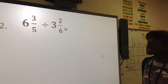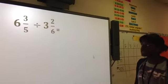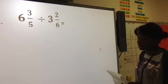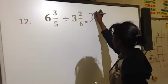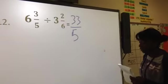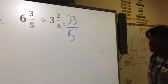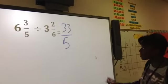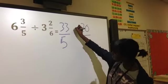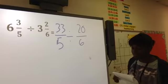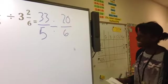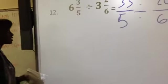Number 12, 6 and 3 fifths, divided by 3 and 2, 6. First, we have to change 6, 3 fifths, and 2, and make a proper factor, which is 3, 3 over 5. And divide, and then you have to change 3 and 2, 6, and 2, in proper factor, which is 2, so that is 20 over 6. And then... So what's the next step?